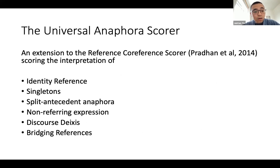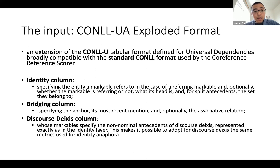The Universal Anaphora scorer is an extension of the reference coreference scorer developed by Samir and his colleagues. In addition to identity reference, the new Universal Anaphora scorer also scores interpretations such as singletons, split antecedent anaphoras, non-referring expressions, discourse deixis, and bridging references. It takes as input the CoNLL-U exploded format, which is an extension of the CoNLL-U format and is broadly compatible with the standard CoNLL format used by the reference coreference scorer.